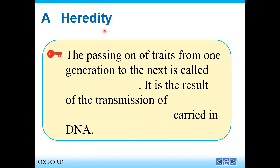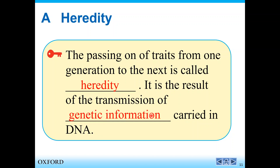This is heredity. To conclude: the passing of traits from one generation to the next generation is called heredity. It is the result of the transmission — passing — of genetic information carried in the DNA. Finish your homework.